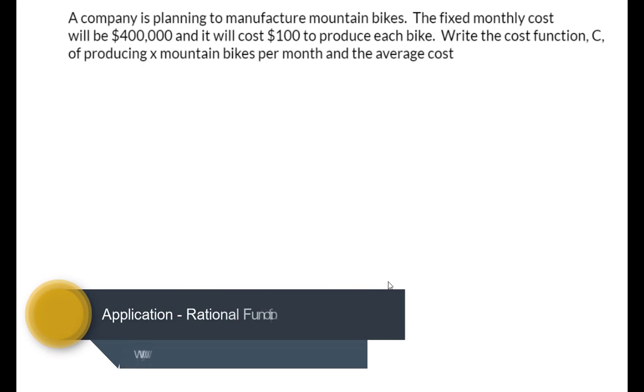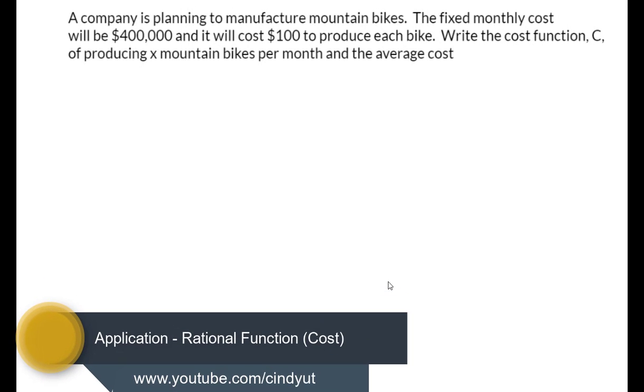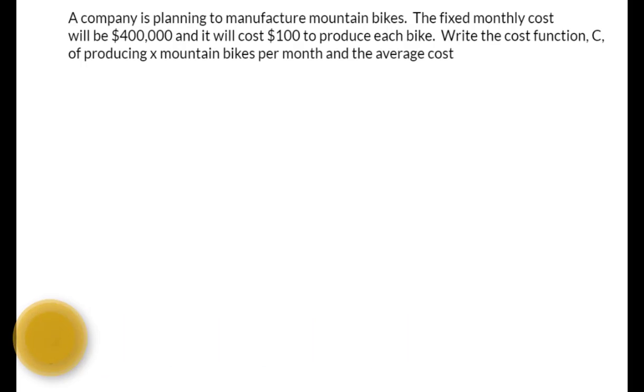We're given some information that says the fixed monthly cost, which means no matter if they sell anything, they're going to have to pay $400,000. And then the variable cost to produce these mountain bikes is $100 for each bike. So that's your variable cost.